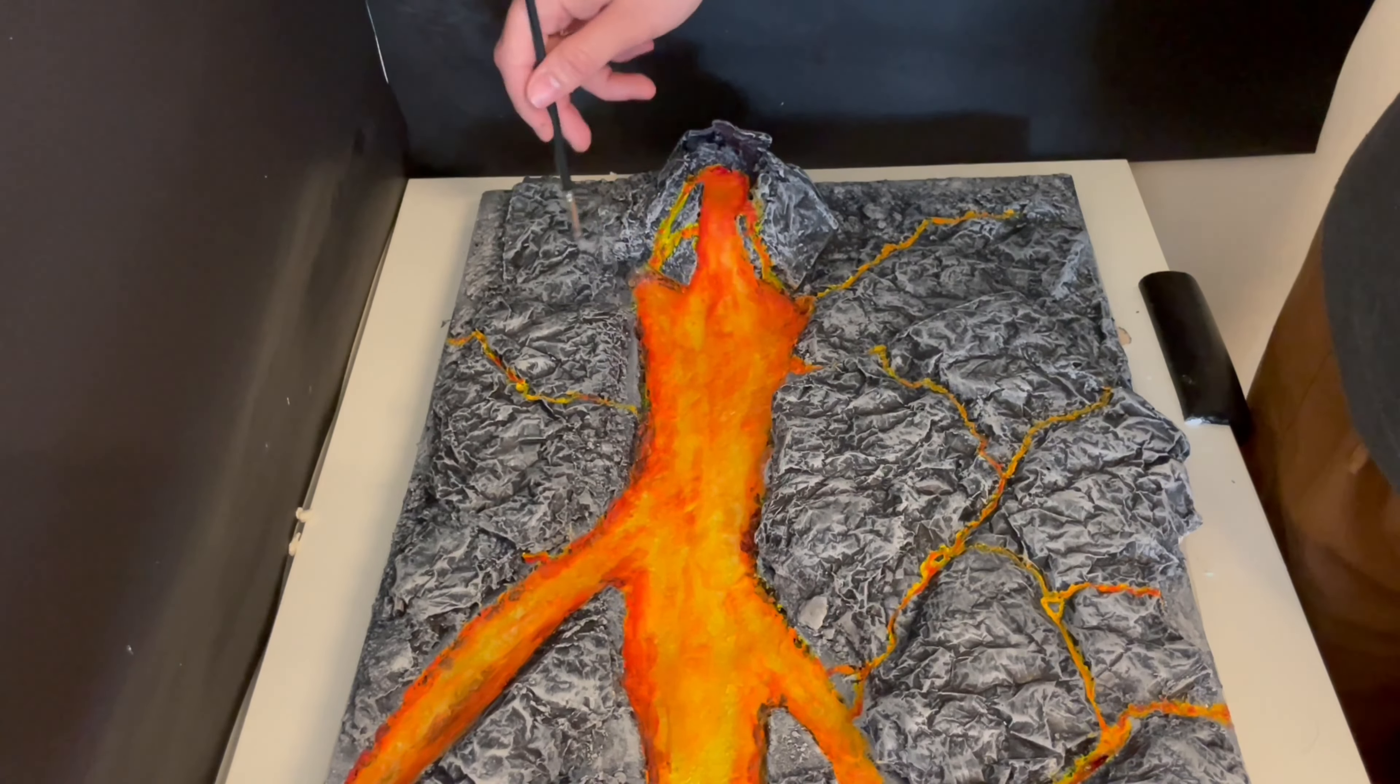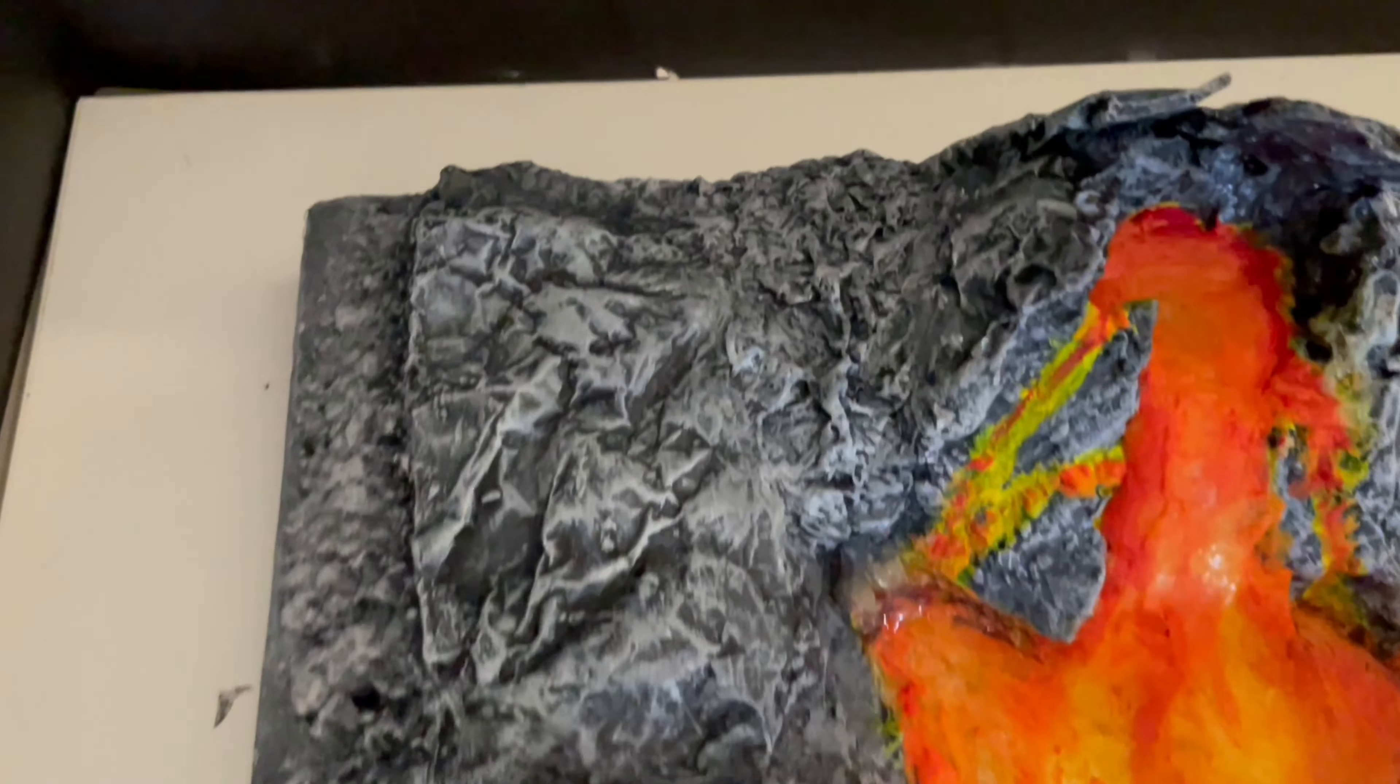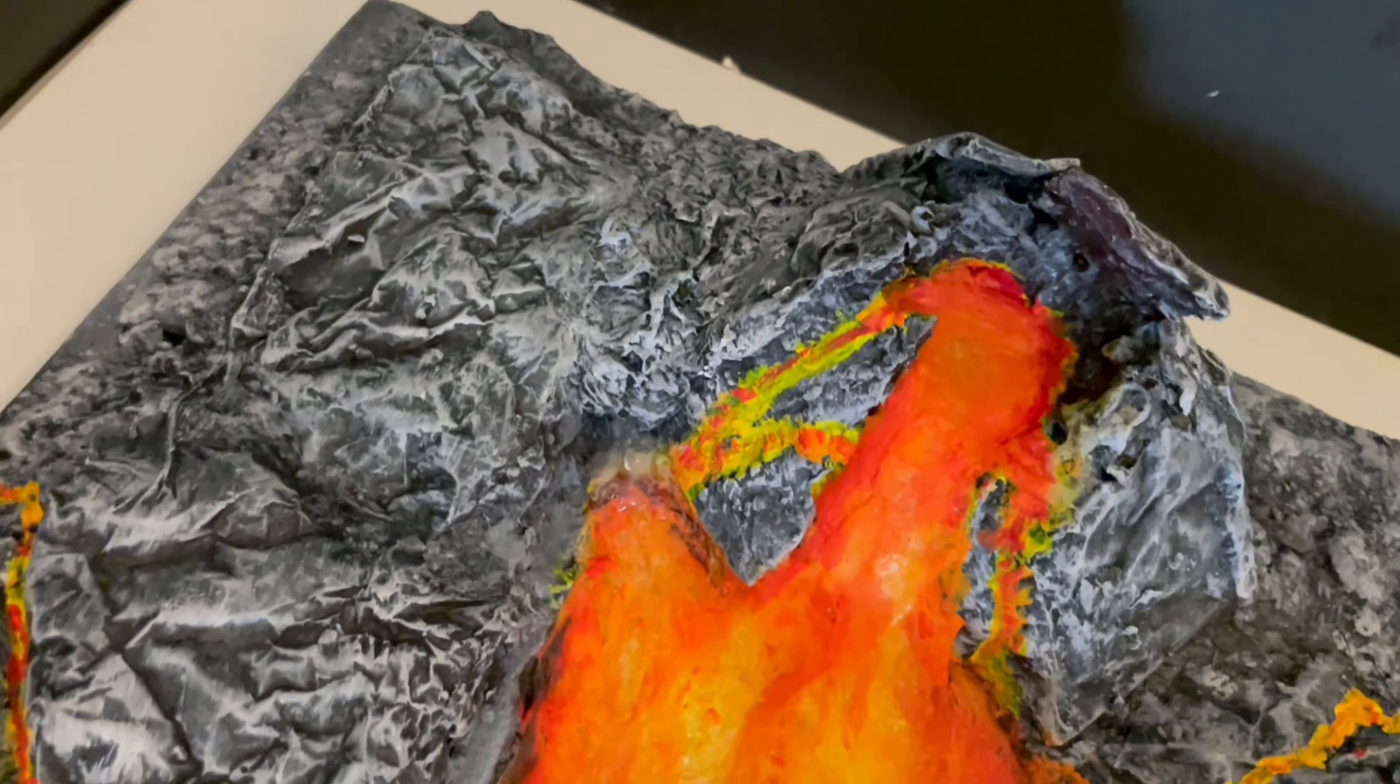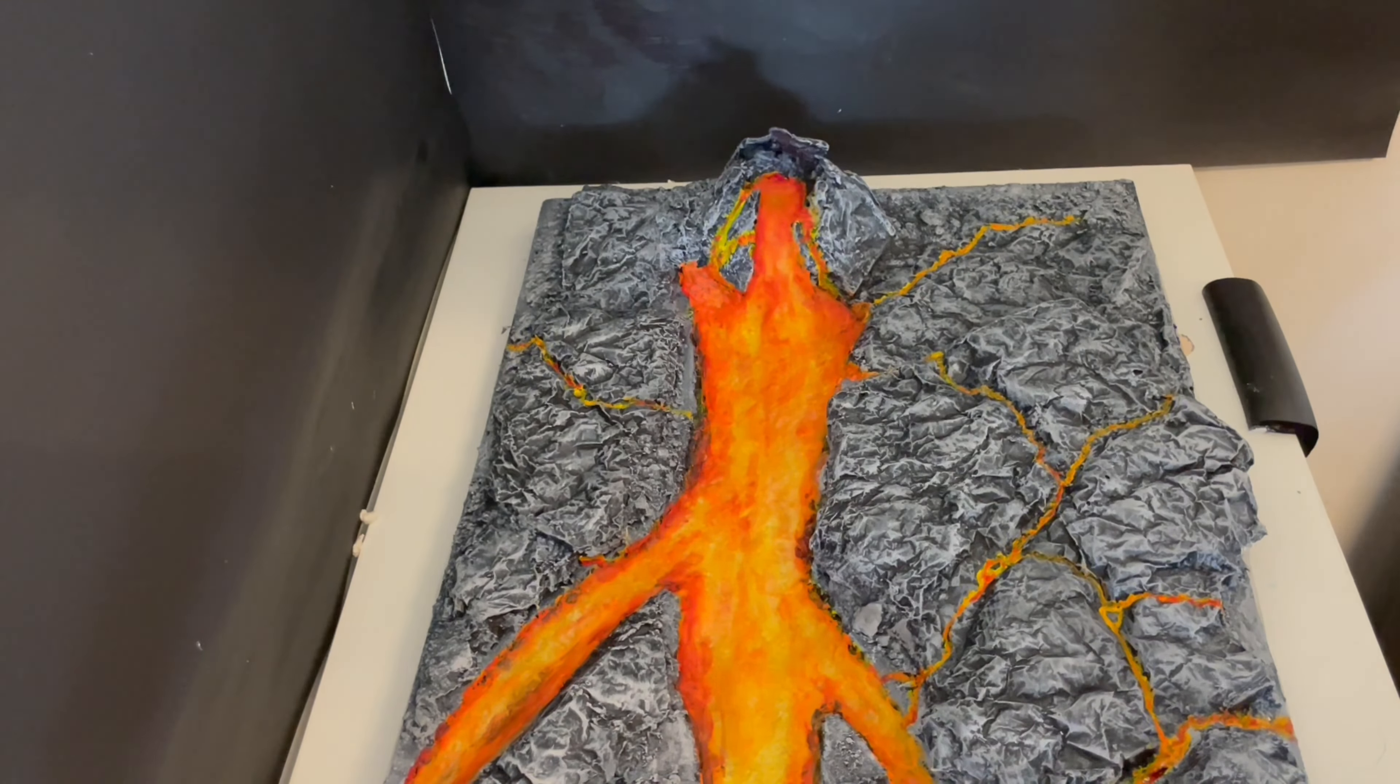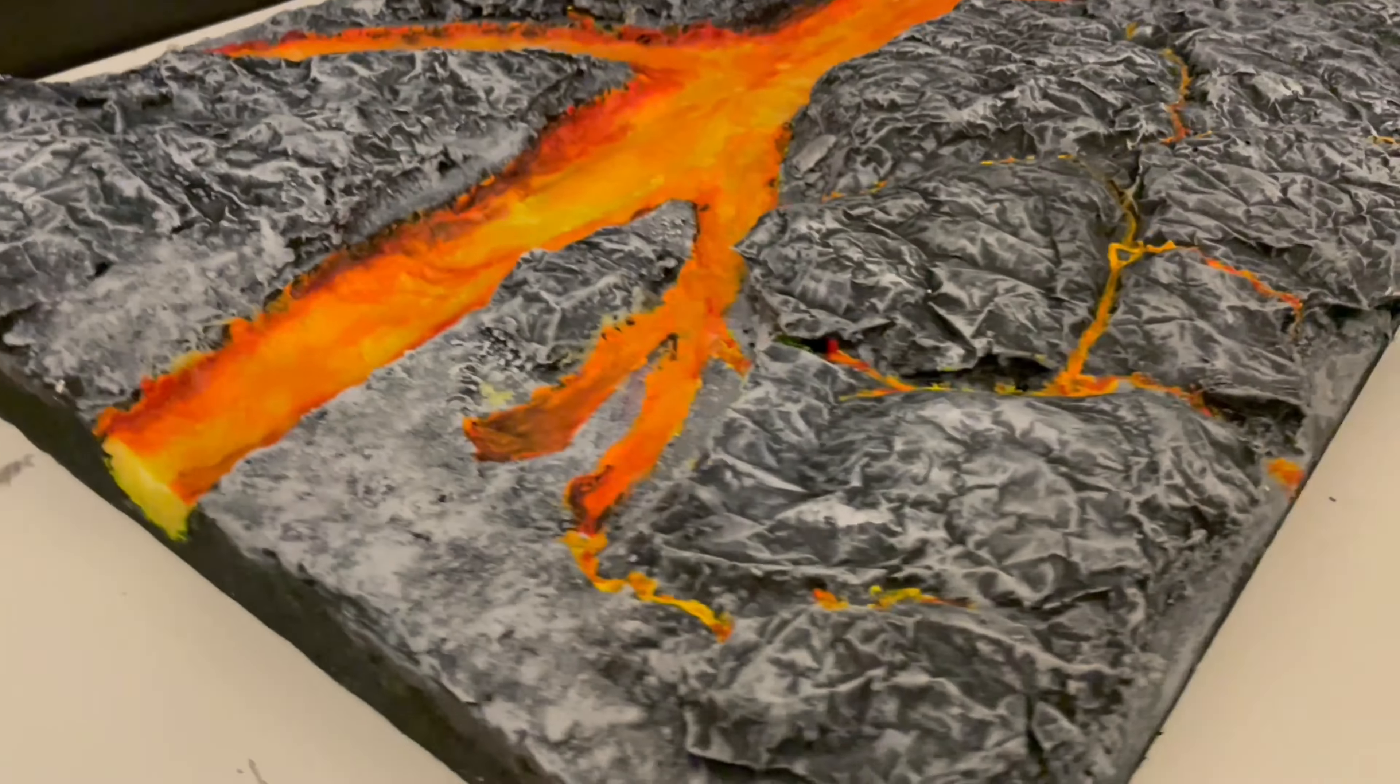Then once it dries, same process of painting it black and layering lighter with dry brushing until it blends to the surrounding rock. Then finally, just paint the remaining exposed hot glue to blend with the lava.